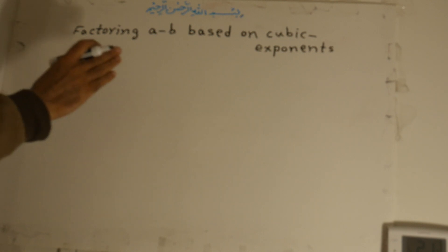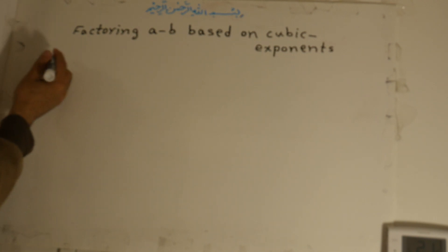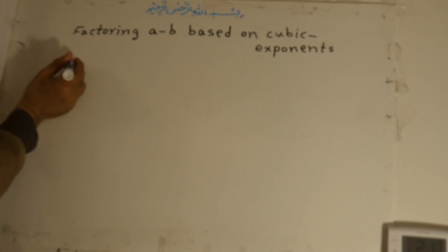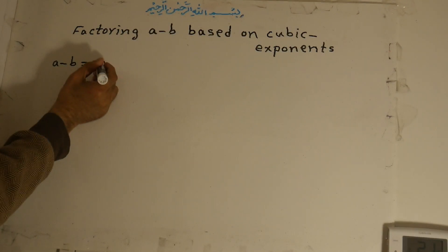Now, factoring (a minus b) based on cubic exponents. We can write a minus b as a to the power of one-third, all to the power of three.